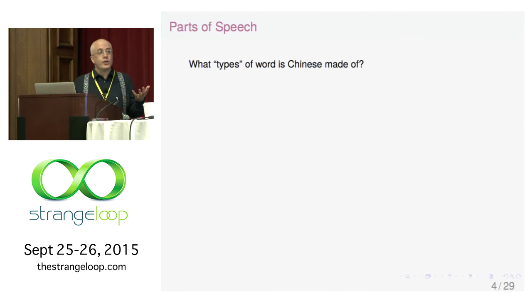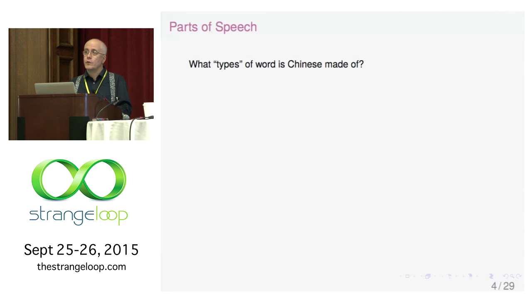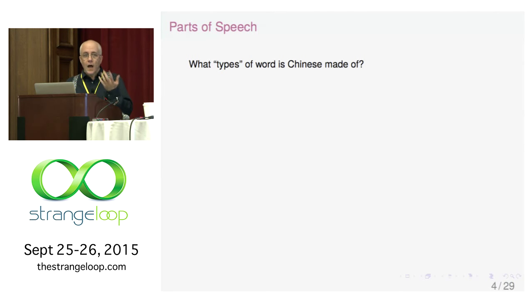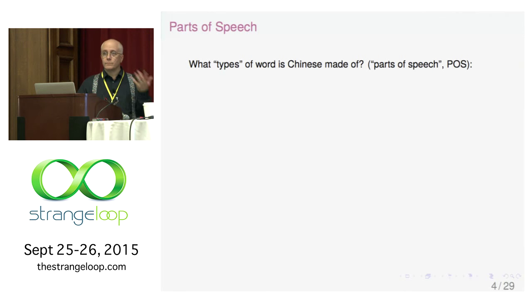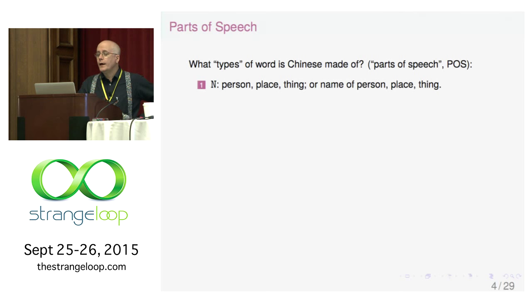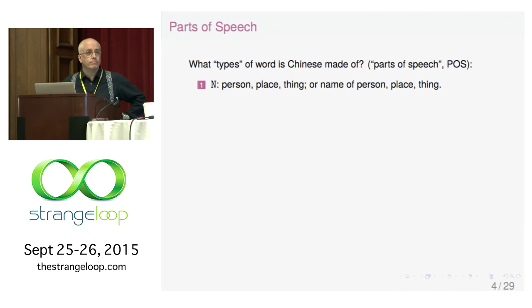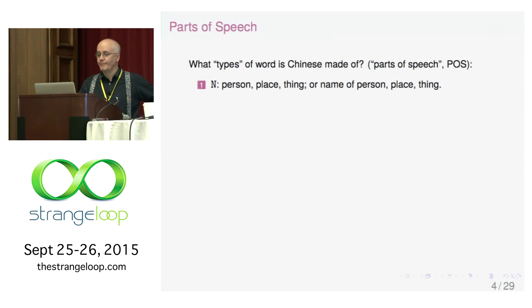So what is this language Chinese made of? It's made of words. In order to talk about grammar, we have to talk about the types of words. In natural languages, the type of a word is called its part of speech — we abbreviate that as POS. We have in Chinese nouns and verbs basically. That's basically all we have. It's a great system — a two-type system.